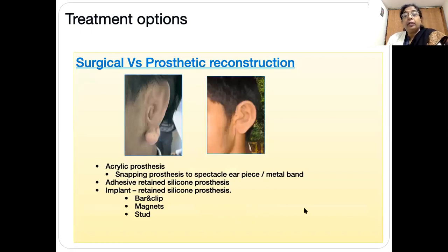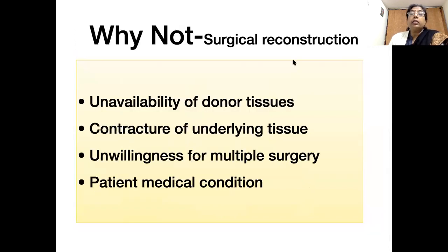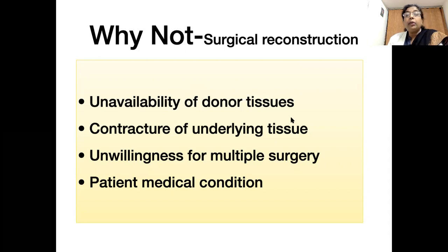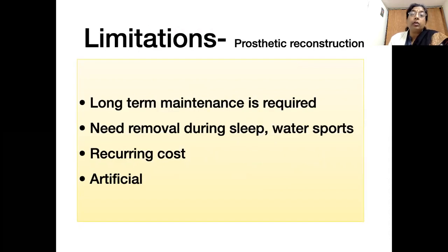In case of facial defects, surgical reconstruction is always given preference over prosthetic reconstruction because it appears to the individual as their own body part. But in certain cases, surgical reconstruction is not possible because of unavailability of donor tissue when the defect is very large, or due to contracture of underlying tissues in cases of burn injury, trauma, or previous surgery. Or the patient may not be willing for multiple surgeries, or the patient's medical condition does not allow multiple surgeries.